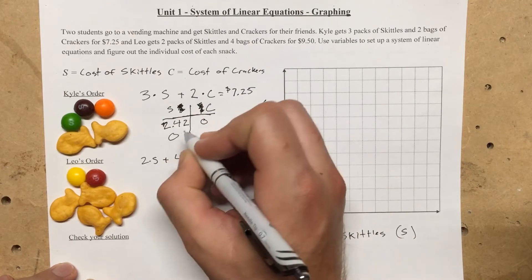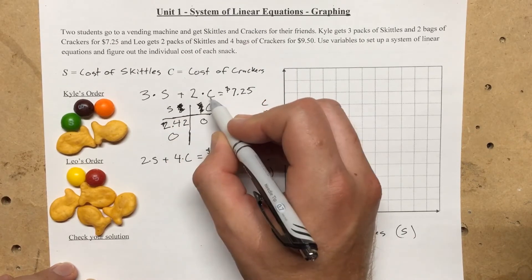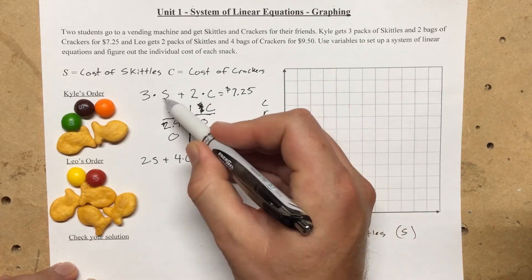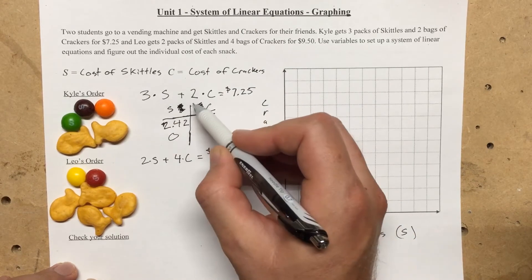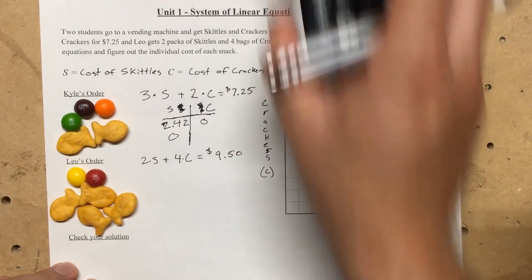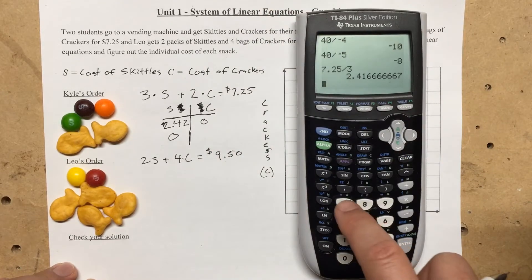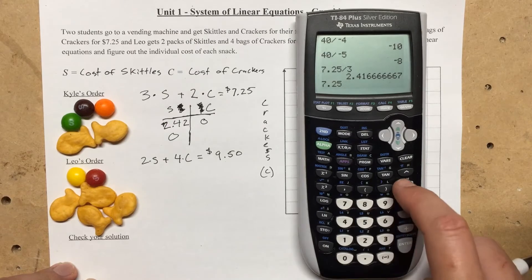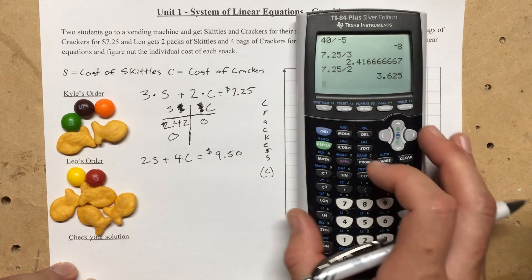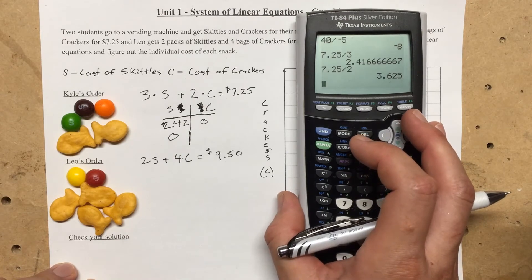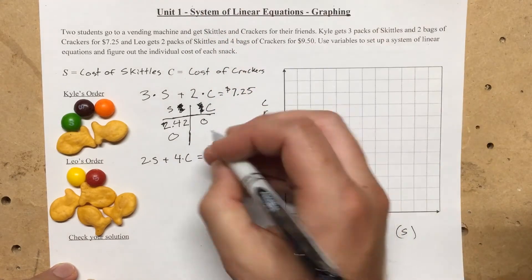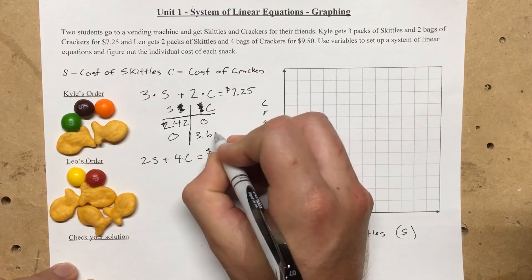If we plug in a zero for s, we'll just be left with two times c equals 7.25. So like we did before, we go 7.25 divided by two, which is 3.625. So these are the two points on the graph for Kyle's equation.